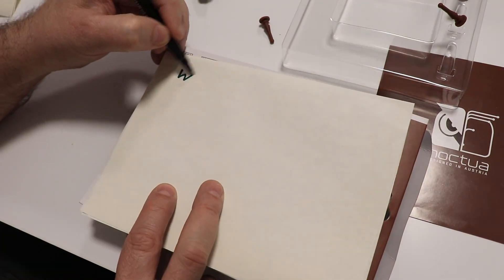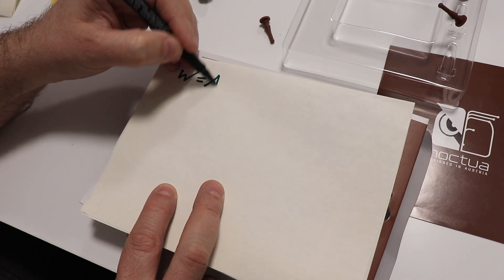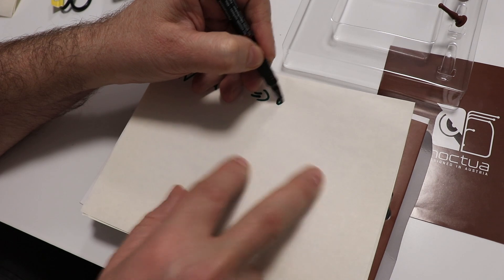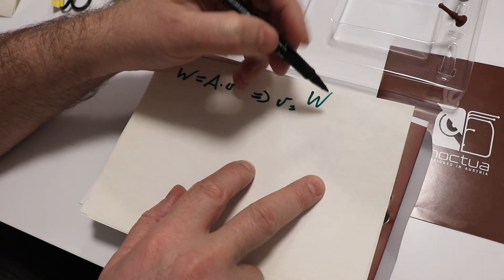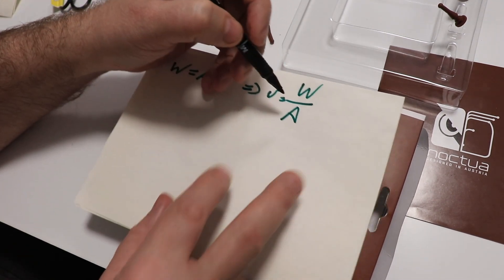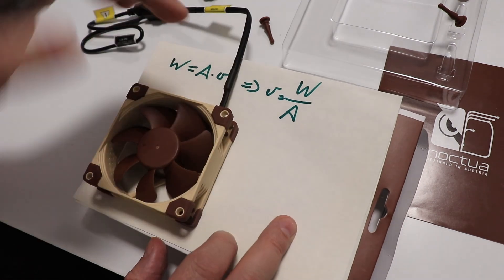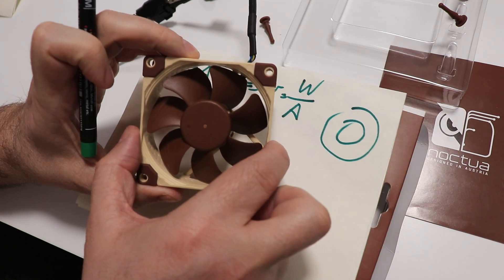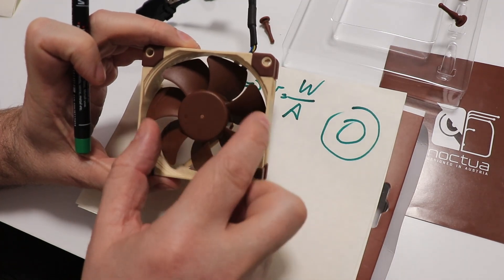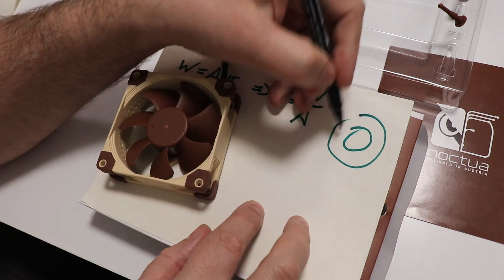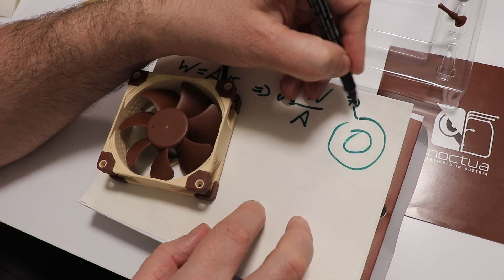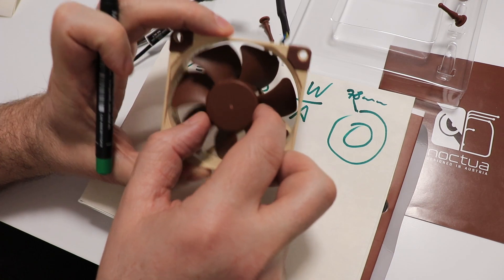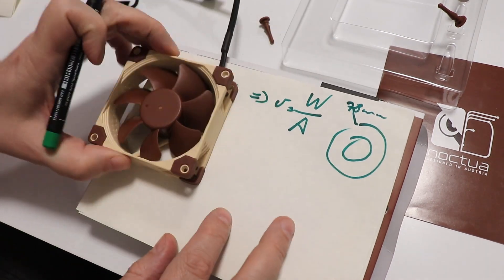Now the cubic flow rate equals area multiplied by velocity. So from this, the velocity equals cubic flow rate divided by area. Now the area is actually some kind of ring. This is 80 millimeters, well actually a little bit smaller. So let's say 78 millimeter is the outer diameter. And the inner ring, inner circle, inner diameter is approximately 30 millimeters.